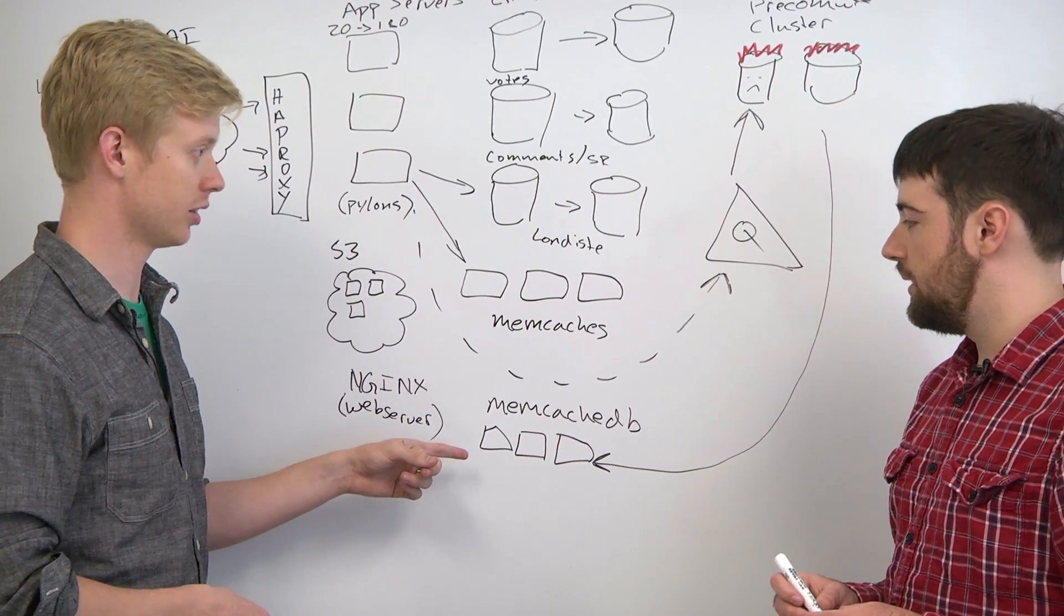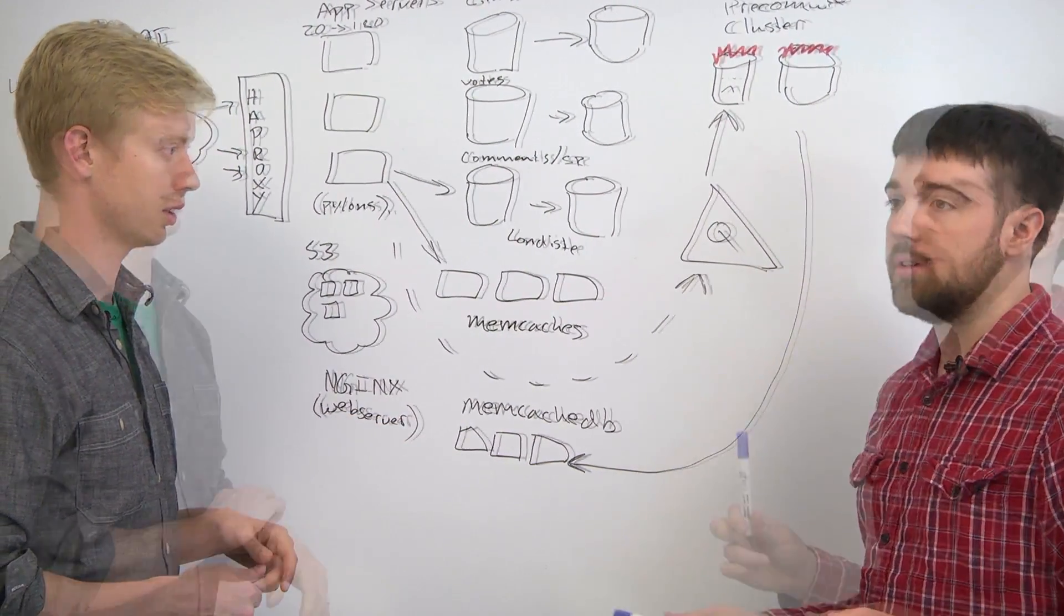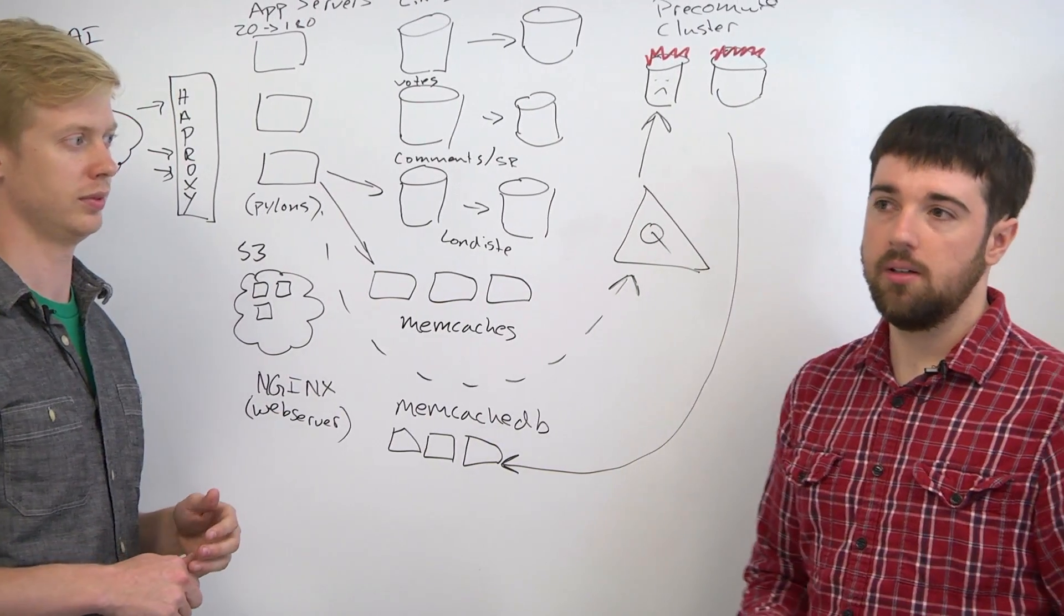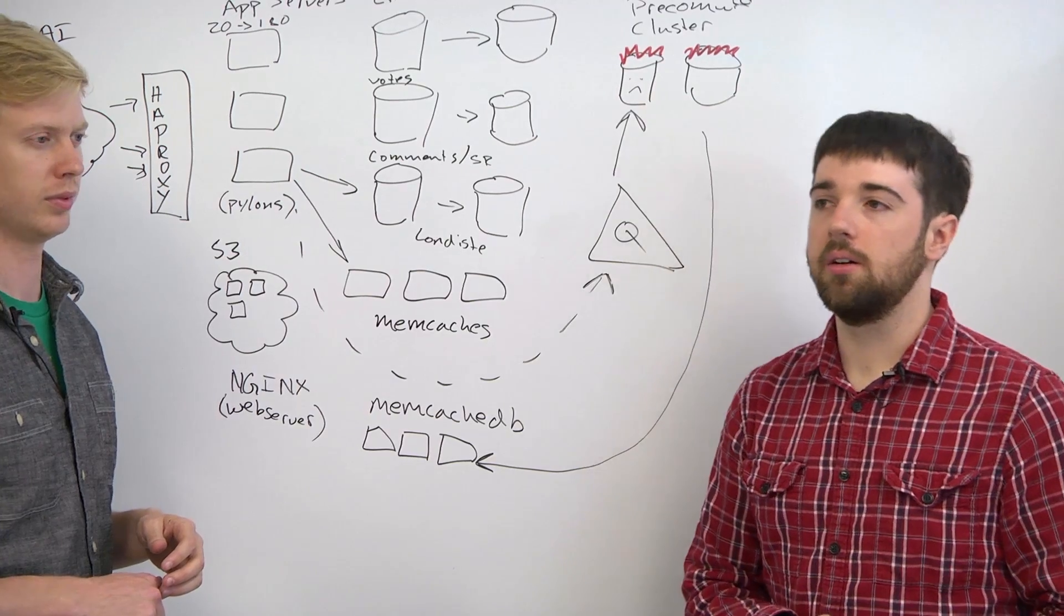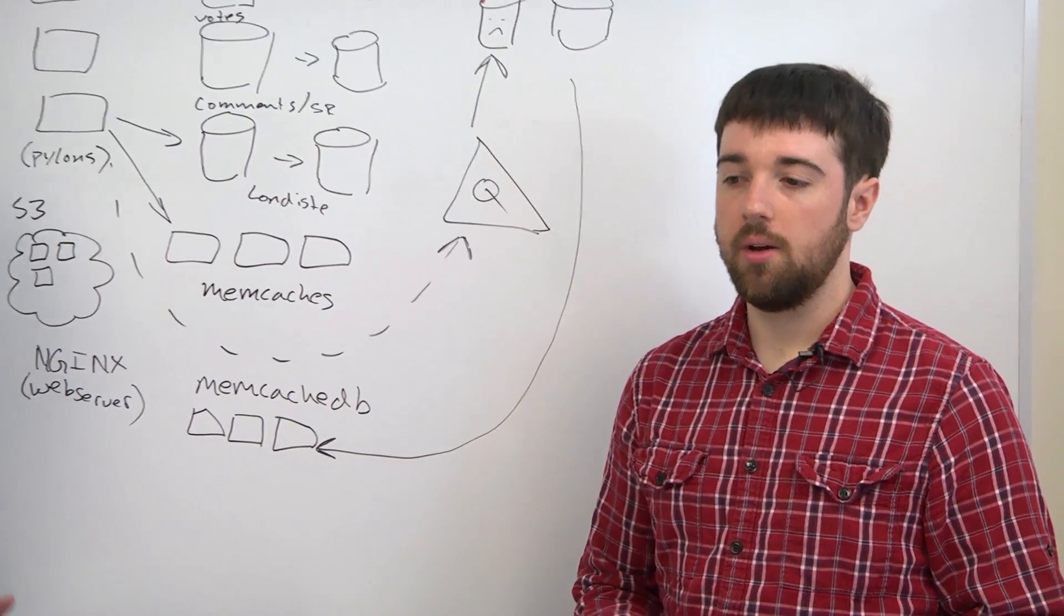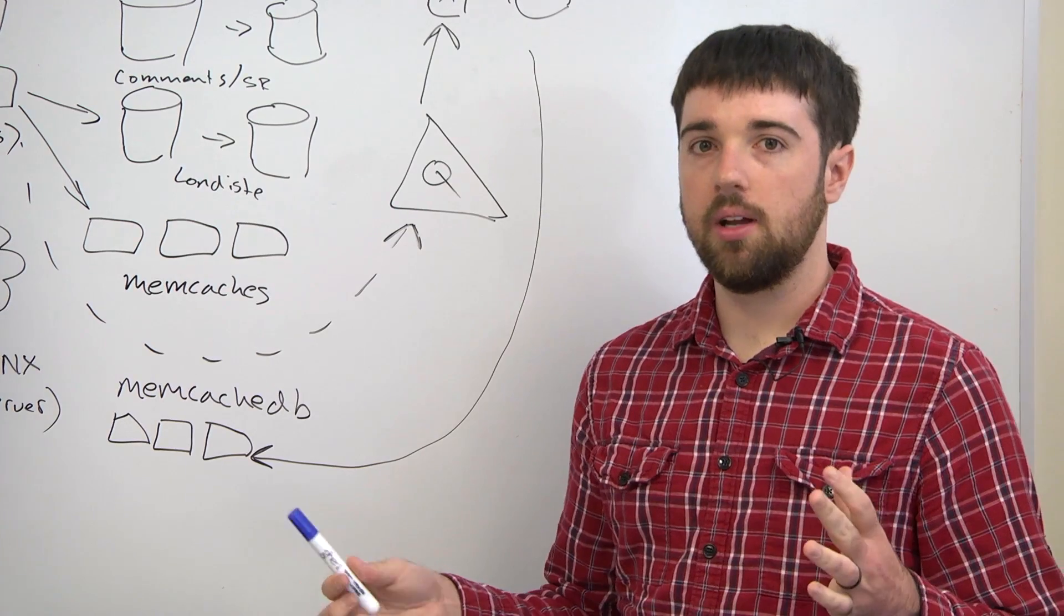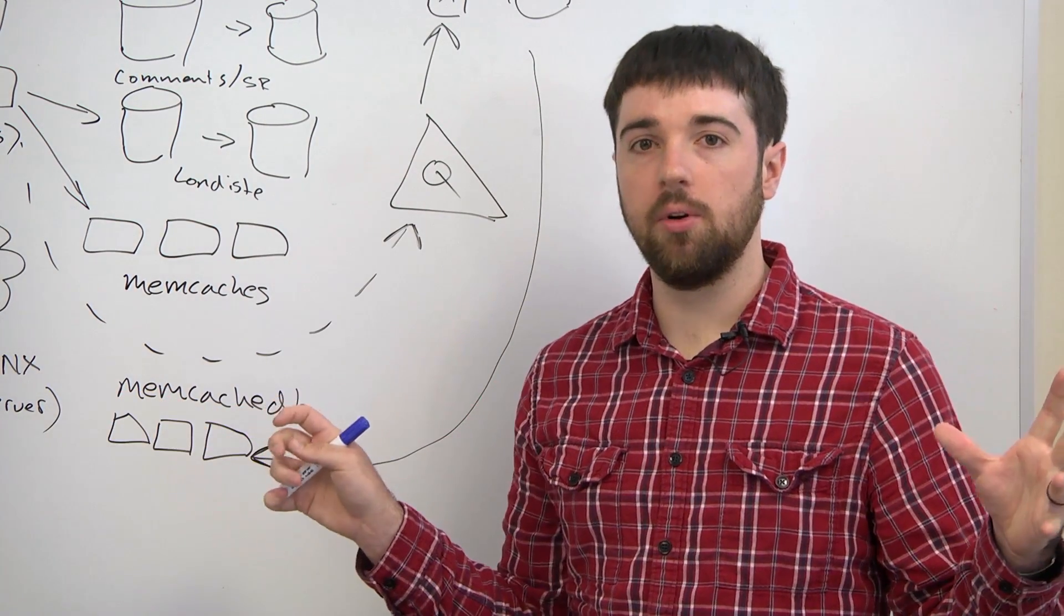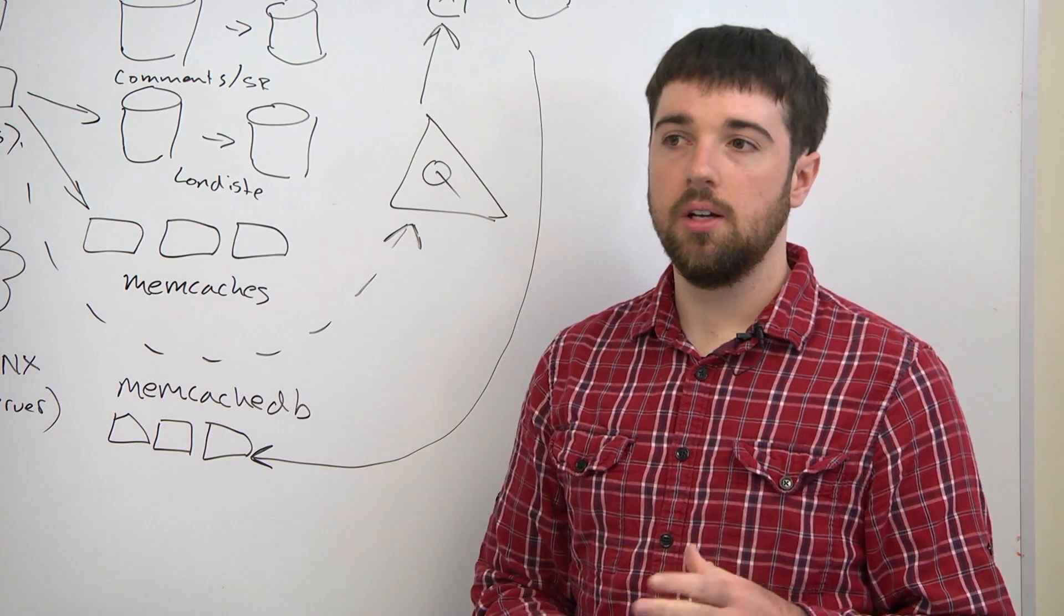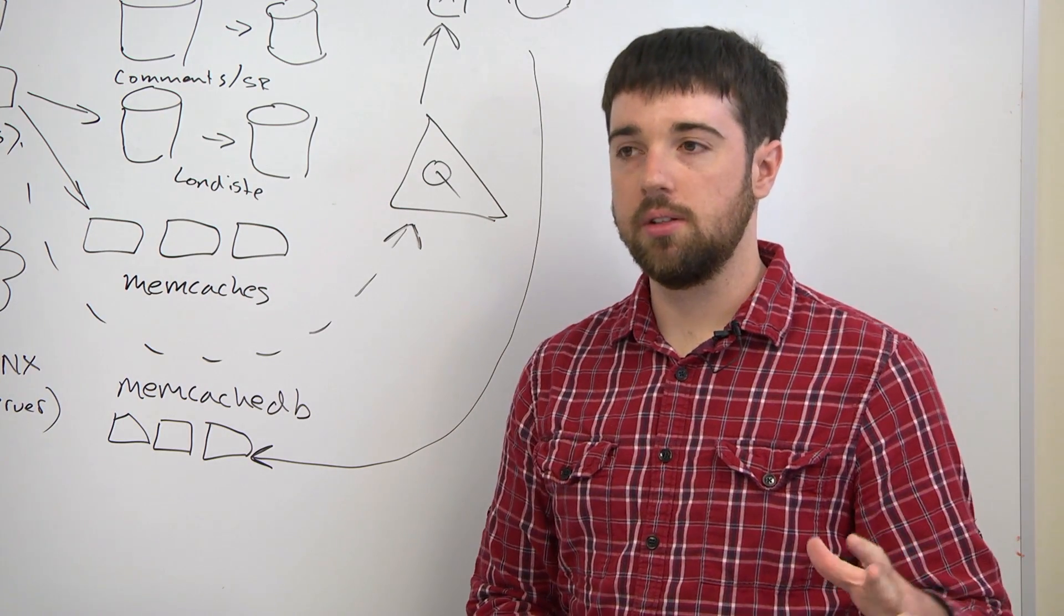So you guys got rid of this. Right, and replaced it with Cassandra, a distributed NoSQL database. The way it works is you have rows, and a row is sharded by its key to somewhere in the ring of servers, so you get automatic sharding across this entire ring.